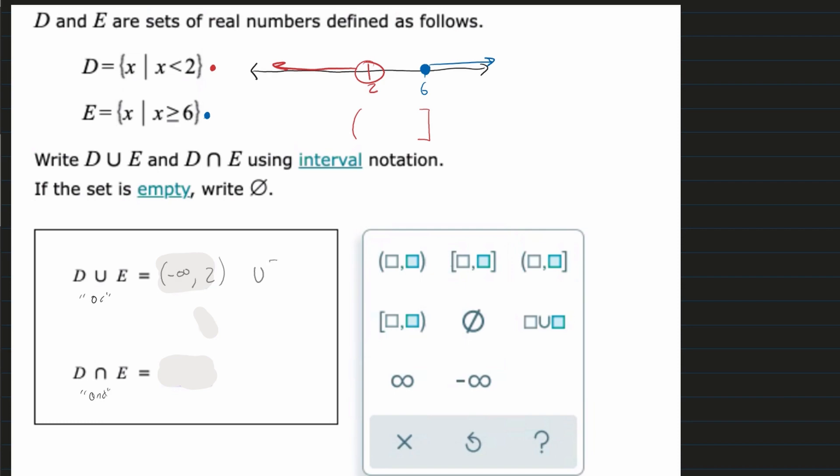Now on the right, we are including our 6. So we have this 6 here. And then we're going to infinity. So we have this infinity here. So that's our OR.